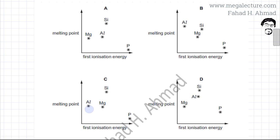If you start plotting the ionization energies, it is aluminum followed by magnesium's ionization energy. Then you have silicon first ionization energy and then phosphorus. So this is the correct order.